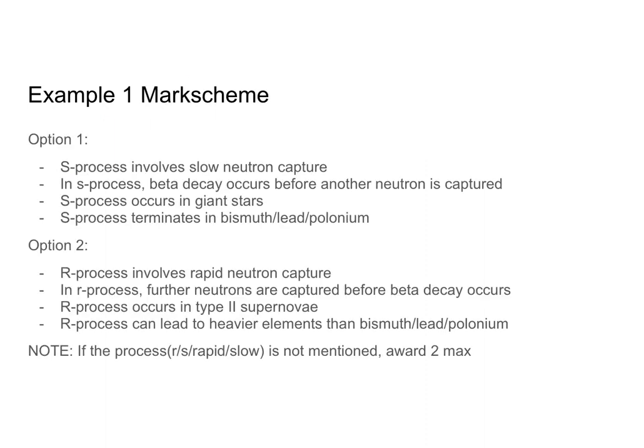For folks who picked S process: four points are given, and as long as you make three of them you get full marks. S process involves slow neutron capture — give yourself a point. In S process, beta decay occurs before another neutron is captured — another point. S process occurs in giant stars — check that off. And S process terminates in bismuth, lead, or polonium — check that off. Note: if you did not say 'S' or 'slow,' the maximum you can get is two out of three.